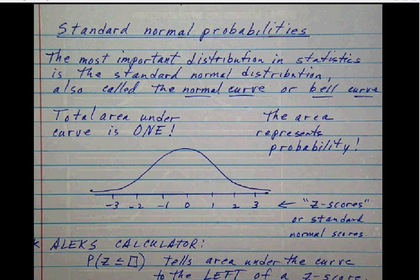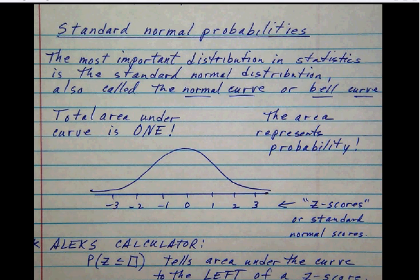Now before we do that, we have to know a few things about this normal distribution, sometimes called the standard normal distribution, sometimes just called the normal curve, sometimes called the bell curve. In any event, it is the most important probability distribution in all of statistics. One thing we have to realize is that the area which is trapped under this curve and above the axis here is a graphical representation of probability.